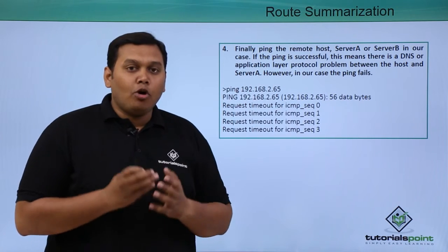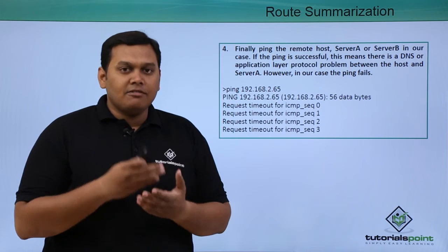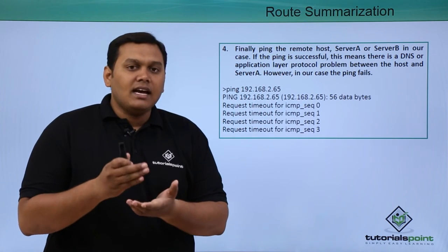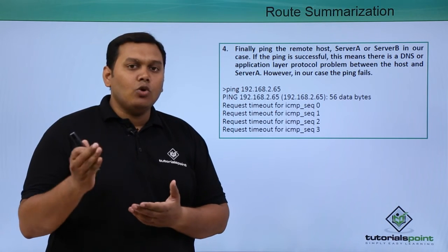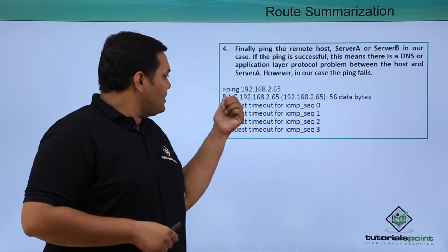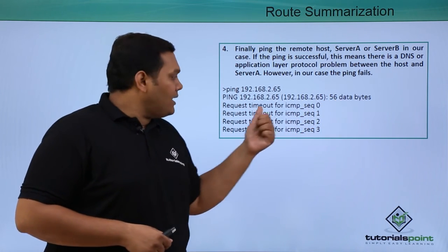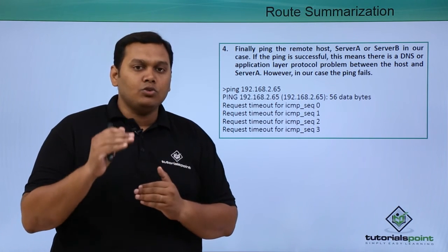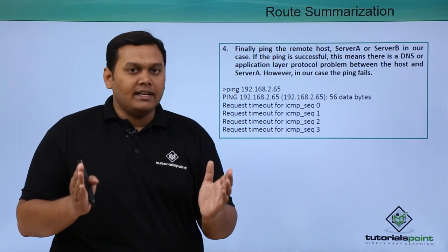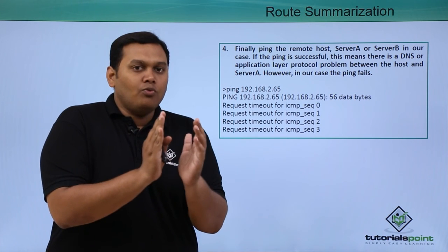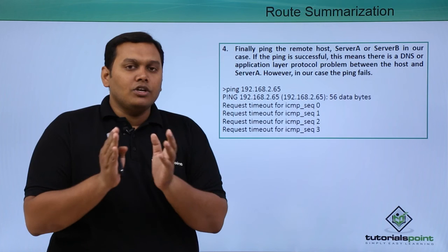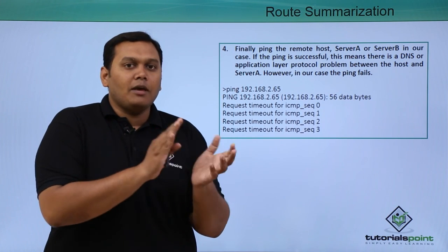The fourth and final step is pinging the remote host — Server A or Server B. If the ping is successful, this means there is a DNS or application layer protocol problem between the server. However, in our case the ping failed — pinging 192.168.2.65 shows 56 data bytes but the request timed out for ICMP sequence numbers 0, 1, 2, and 3. It tried four times but failed. This means there is no problem at the DNS or application layer. This is how we verify network connectivity between two devices — host and switch, host and server, or host and router. These are the four steps of network connectivity to check before IP addressing.